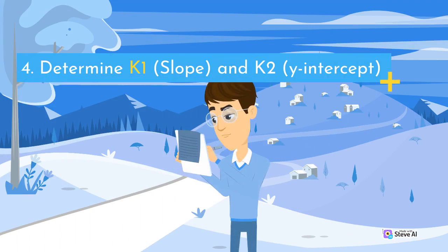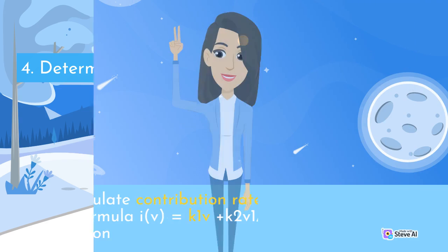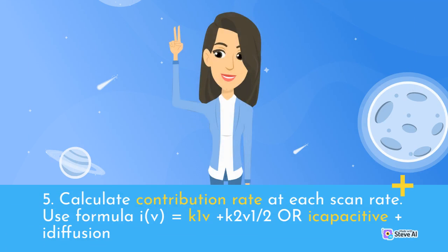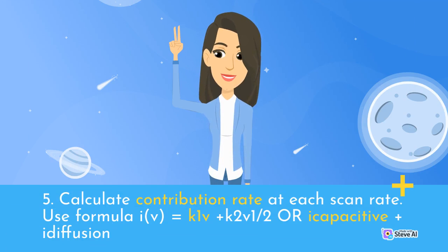Step 4: Determine k1 (slope) and k2 (y-intercept). Step 5: Calculate the contribution rate at each scan rate using the formula i(V) = k1·v + k2·v^(1/2), which separates the capacitive current (k1·v) and diffusion current (k2·v^(1/2)).